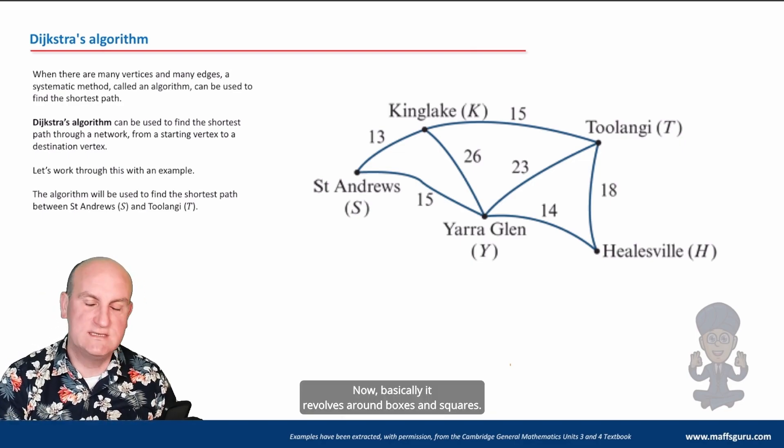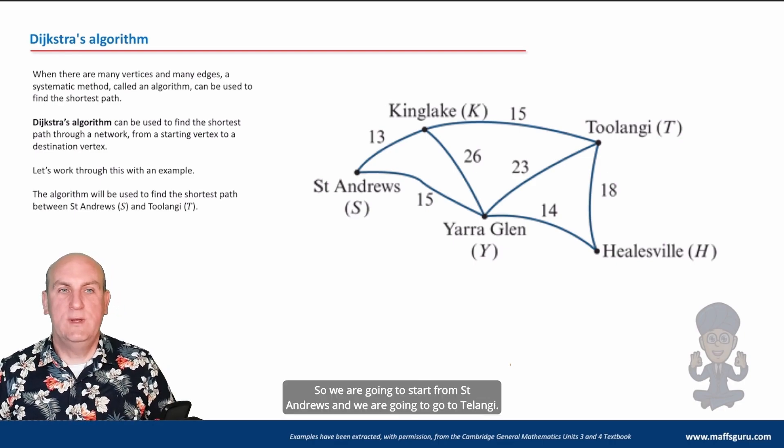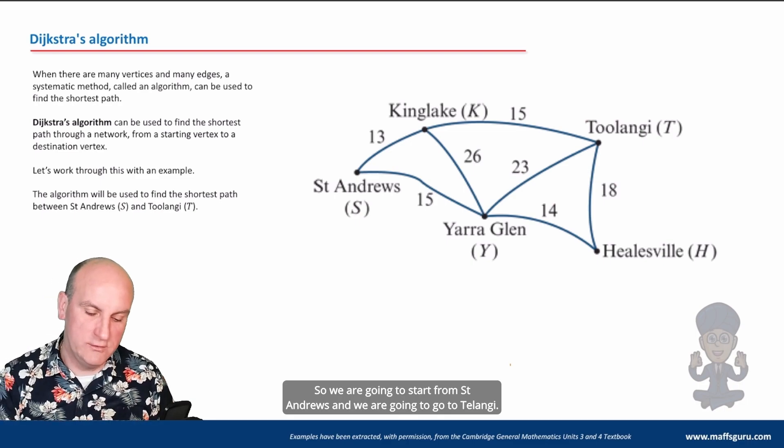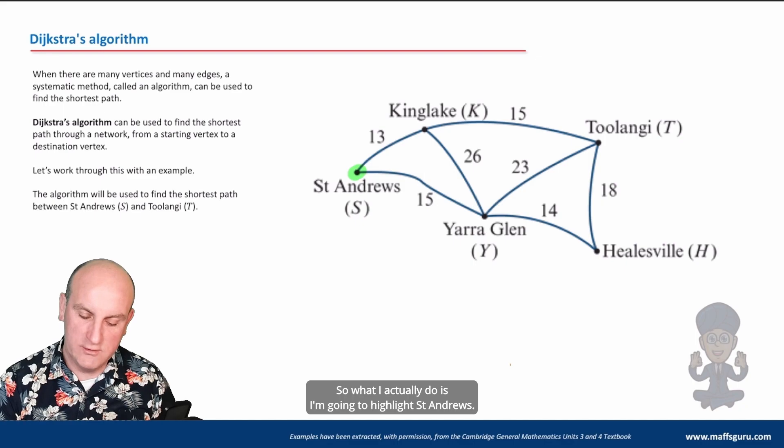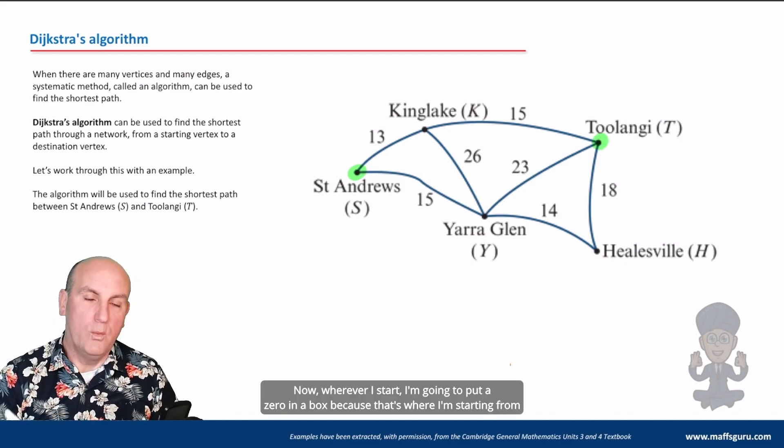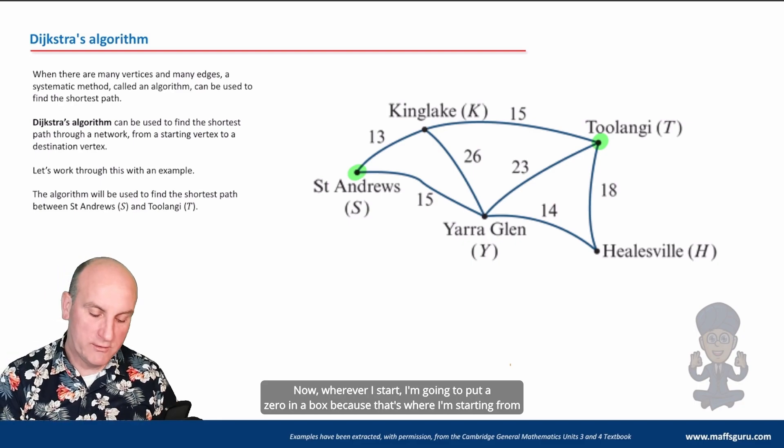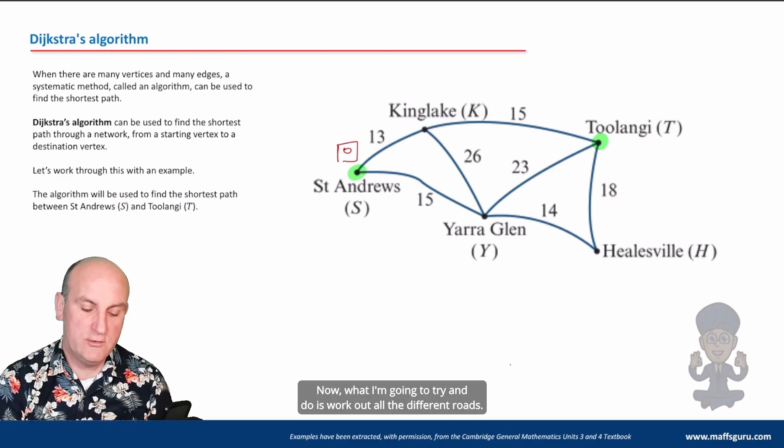Now basically it revolves around boxes and squares, or numbers and boxes I think, anyway. Right, so we are going to start from St Andrews and we are going to go to Toolangi. So what I actually do is I'm going to highlight St Andrews, I'm going to highlight Toolangi. Now wherever I start, I'm going to put a zero in a box because that's where I'm starting from, and that will sort of make sense in just a moment. So there is a zero in a box.